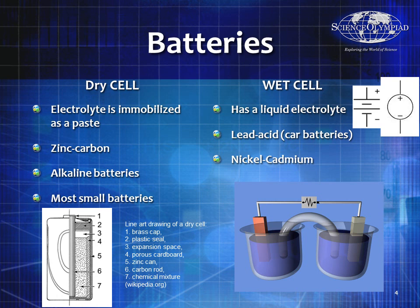A wet cell battery has a liquid electrolyte. These are going to be like your lead acid batteries — car batteries, marine batteries — and as we'll learn later, ones you can make with soda like Coca-Cola. You also have nickel cadmium and a few other types. There are two different ways of showing a DC independent voltage source, both deemed acceptable, where the one on the left usually shows a two-cell battery.